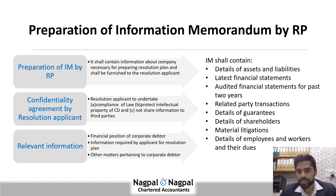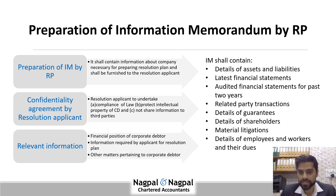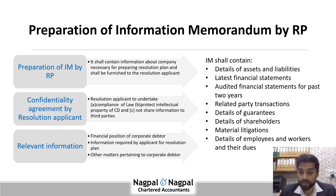Let us talk about the Information Memorandum — what it contains. The Information Memorandum shall contain details of assets and liabilities of the corporate debtor, the latest financial statements, audited statements for the past two years, all related party transactions, detail of any guarantees, details of shareholders with their shareholding, material litigations, details of employees and workmen and their dues. This document has to be given to the prospective resolution applicants so they can come up with a resolution plan. They also have to sign a confidentiality agreement stating they will protect the intellectual property of the corporate debtor and will not share this information with third parties.